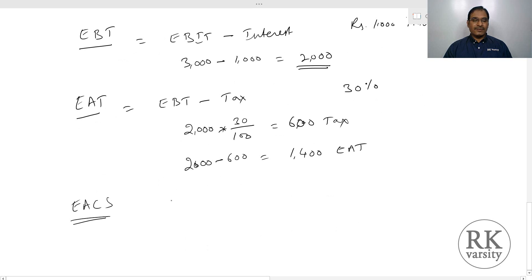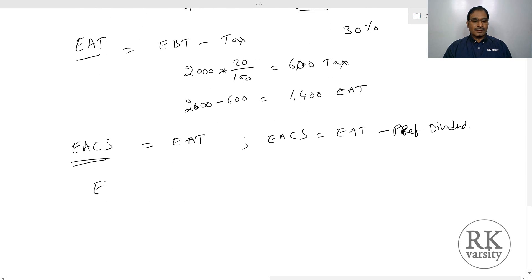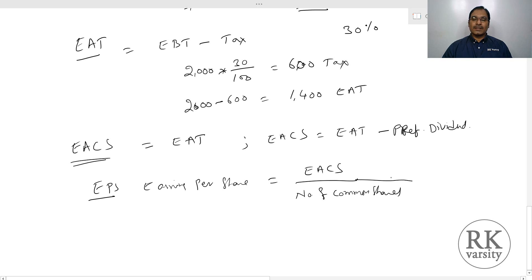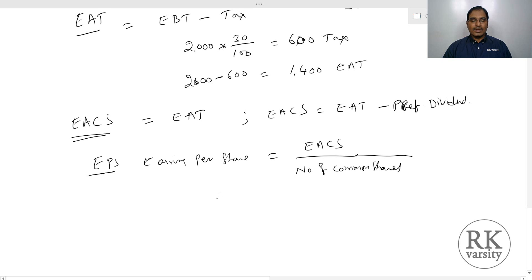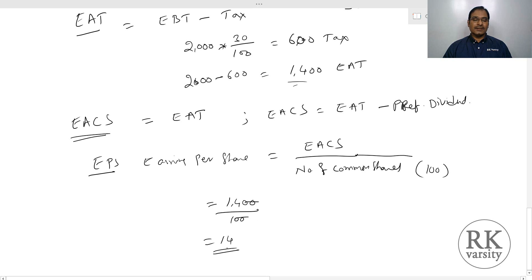If there are no preference shareholders, earnings available to common shareholders equals earnings after tax. If there are preference shareholders, earnings available to common shareholders equals earnings after tax minus preference dividend. Finally, EPS — earnings per share — equals earnings available to equity shareholders divided by number of common shares. Assuming 100 common shares and earnings of Rs.1,400, EPS is Rs.14.